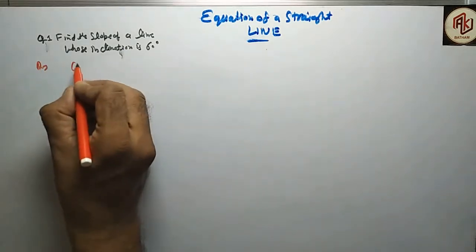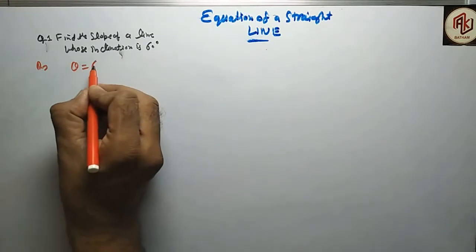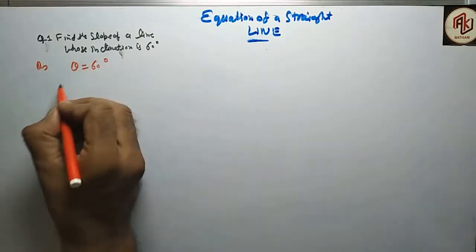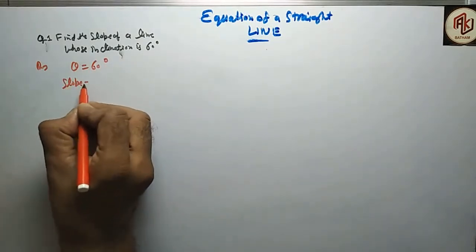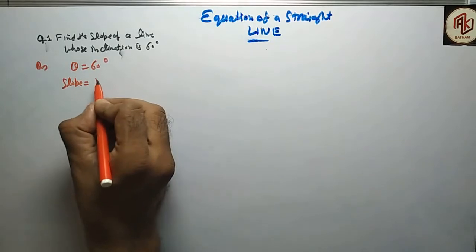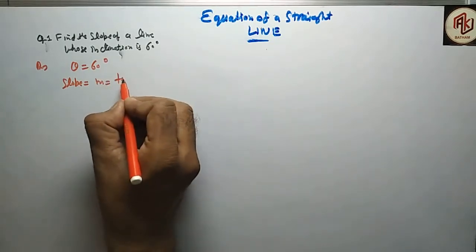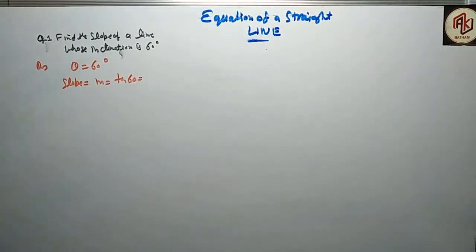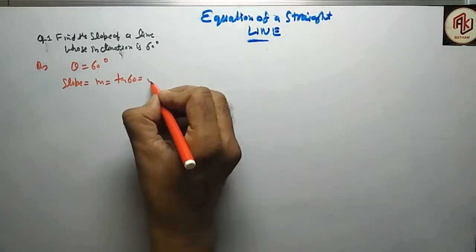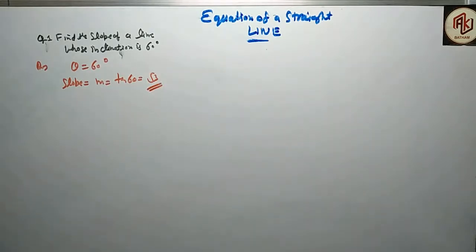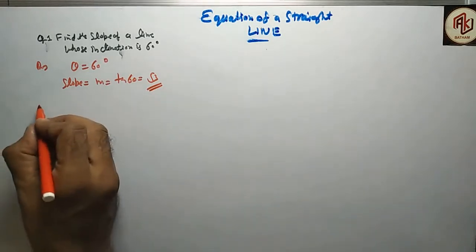The slope of the line is equal to tan 60°, and the value is root of 3. This is a simple question and it is solved.